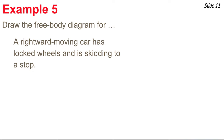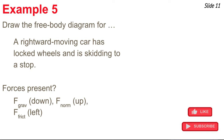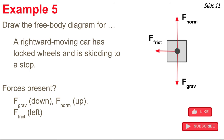Example five also involves acceleration: a rightward-moving car has locked wheels and is skidding to a stop. Gravity is down, and there's a normal force up because the car is pressed against the road surface. There's also friction to the left, because the locked wheels cause the car to skid across the road — two surfaces sliding against each other. There's no rightward force since the wheels aren't spinning. With three forces, I draw three arrows: up and down are balanced, and friction is the unbalanced force causing leftward acceleration.